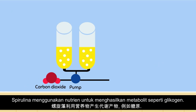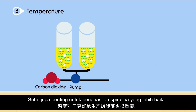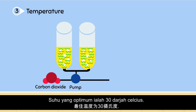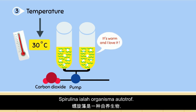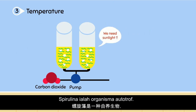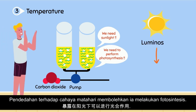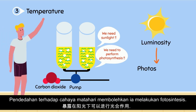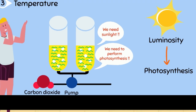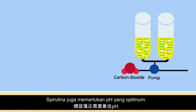In addition to aeration and nutrients, temperature is also important for better yield. The optimum temperature is 30 degrees Celsius. Spirulina is an autotroph organism, so it needs light to perform photosynthesis. With exposure to high luminosity during cultivation, spirulina is able to perform photosynthesis.